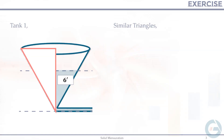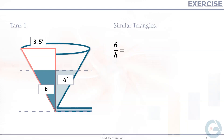Tank 1 has an altitude of 6 feet. The final water level has a height H, which is currently unknown. Using similar triangles, the corresponding sides are proportional: 6 feet corresponds to H, and 3.5 feet (the radius of the full tank) corresponds to R₁ (the radius of the water in its final state). So 6/H = 3.5/R₁.